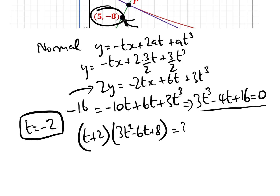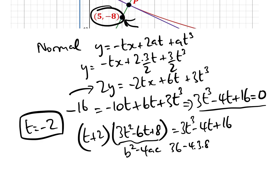The quadratic factor 3t² − 6t + 8 has no real solutions because the discriminant b² − 4ac = 36 − 4(3)(8) = 36 − 96 = −12, which is negative. So the only real solution is t = −2.